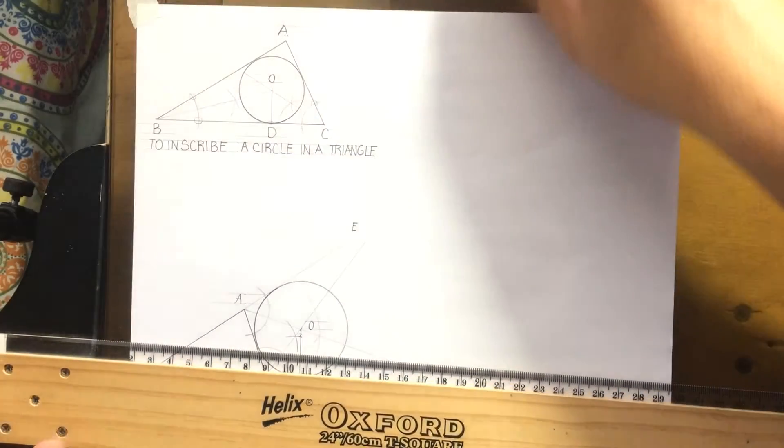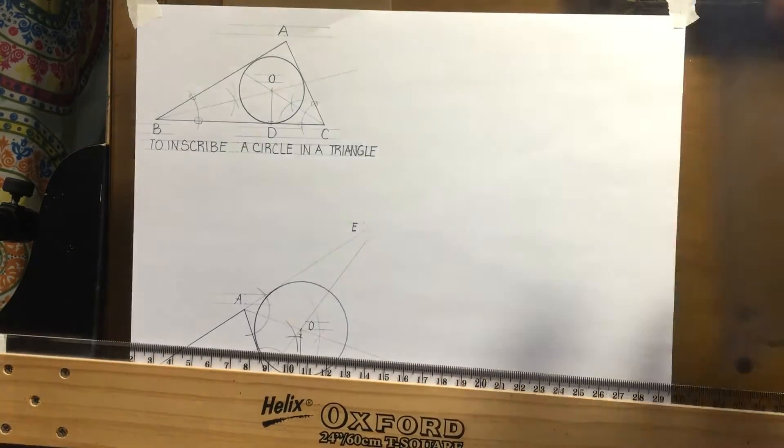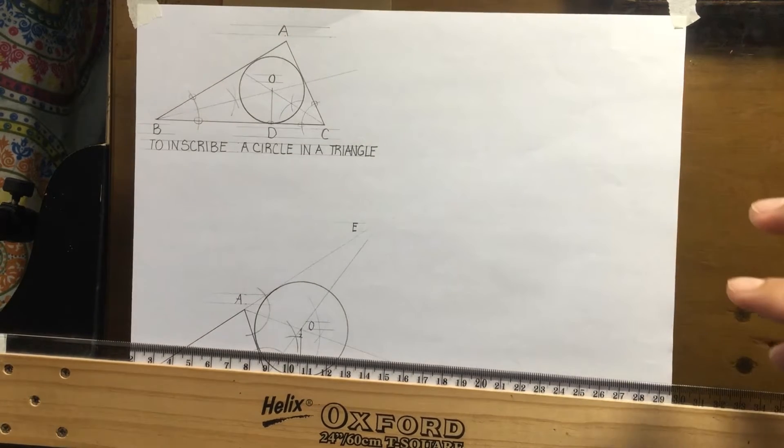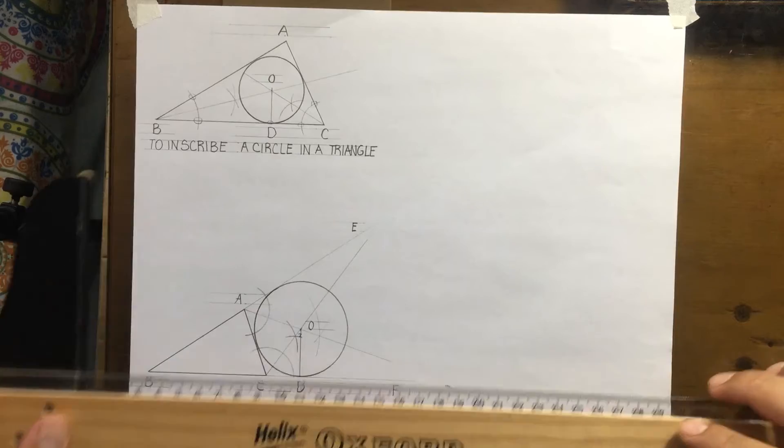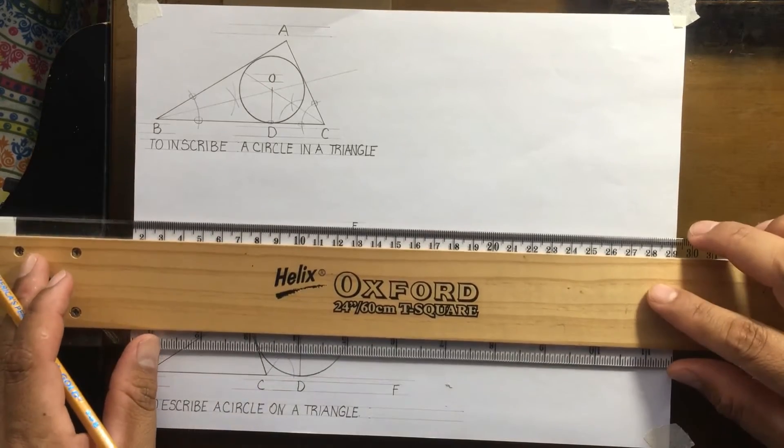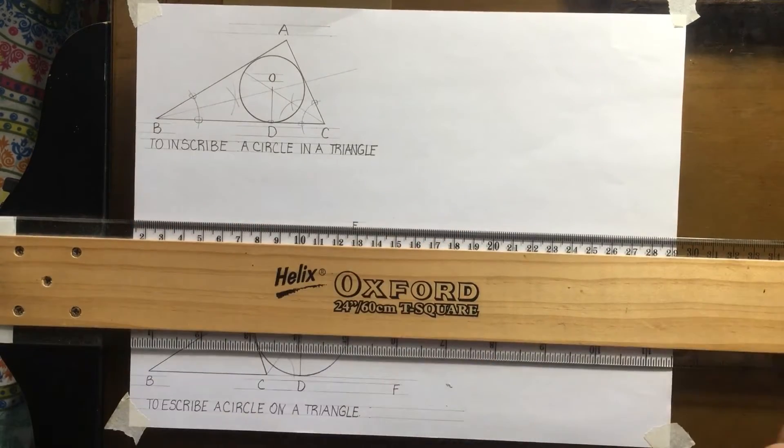To circumscribe a triangle with a circle, first you need to draw a triangle, any triangle.